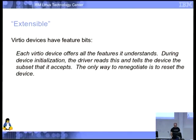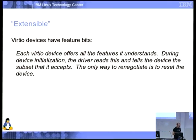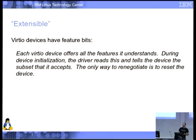Extensible: we offer a bit set of features. The device says 'here's all the stuff I support,' and the driver says 'here's the subset that I understand.' This gives you both forwards and backwards compatibility. A new device will support all these feature bits; an old driver will just acknowledge the ones it understands. In real silicon, eventually you release a 2.0 and everybody has to update drivers — but this is software, and this extensibility mechanism has served us remarkably well.